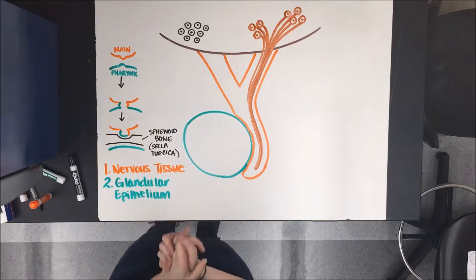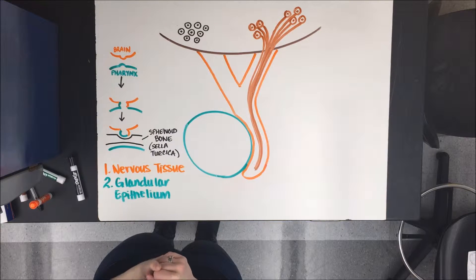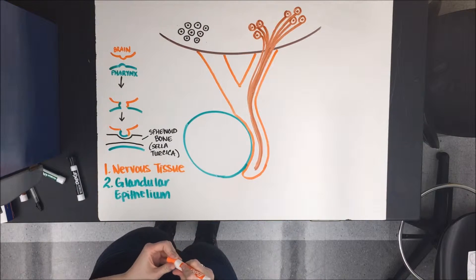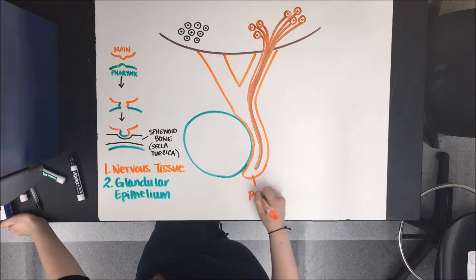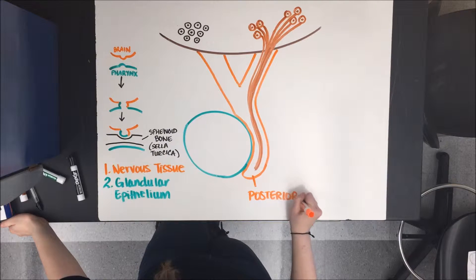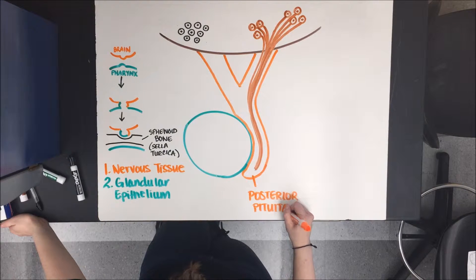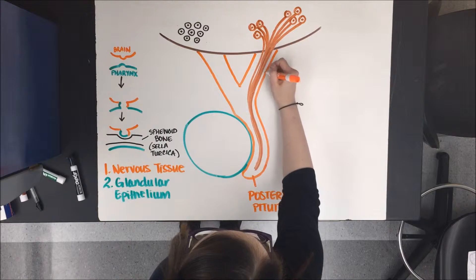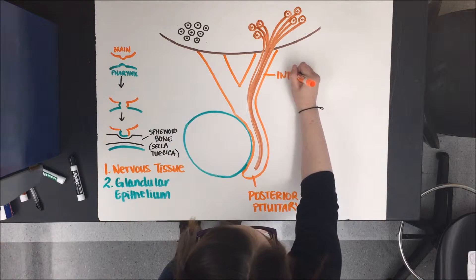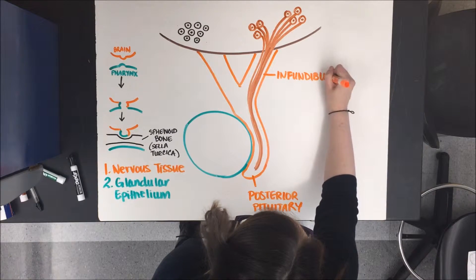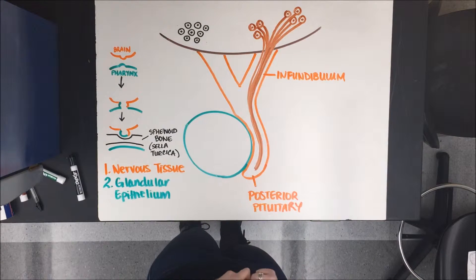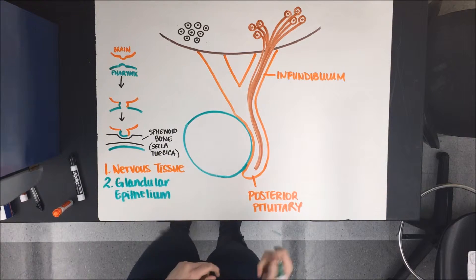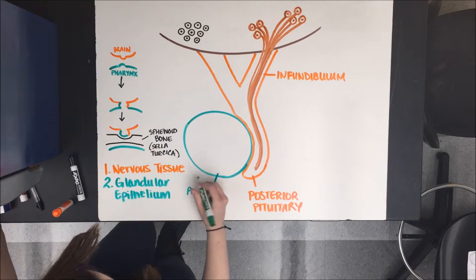Now let's look at the larger picture. The pituitary gland has two parts: the anterior portion and the posterior portion. The nervous tissue we talked about earlier, which arose from the developing brain, becomes the posterior pituitary. The posterior pituitary is actually connected to the brain by the infundibulum, which is this band of tissue here. The glandular epithelium portion, which arises from the developing pharynx, is the anterior pituitary.